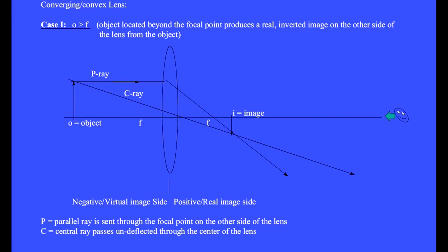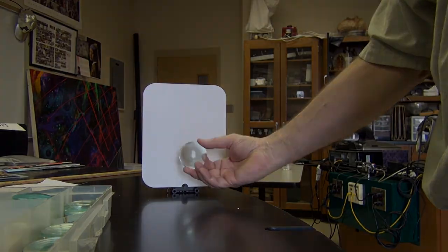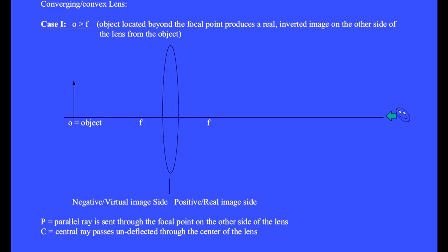A second ray that happens to leave the object and passes straight through the center of the lens will be undeflected by the lens. This is said to be the central ray. Where these two rays meet, that's where the image is located. We see that this image is upside down or inverted. It is reduced in size. And this is a real image because the rays pass through this point — we could place the viewing screen at this location and see the image on the screen. To get these two rays in your head, you should draw three copies of this lens and then draw the pair of rays on each of those three copies. Between the lenses and mirrors, we're going to end up with six cases, so we want to practice drawing the rays a few times for each case.